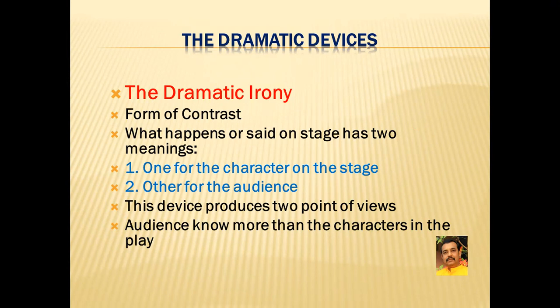Dramatic irony is a form of contrast. Often it happens that what is said on the stage has two meanings. The first meaning is for the characters in the play, while the second meaning, much wider than the first, is for the audience. This device, which produces two points of view or meanings, is called dramatic irony. In this device, the audience knows more than the characters in the play.